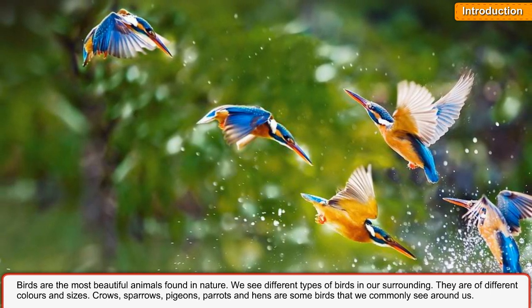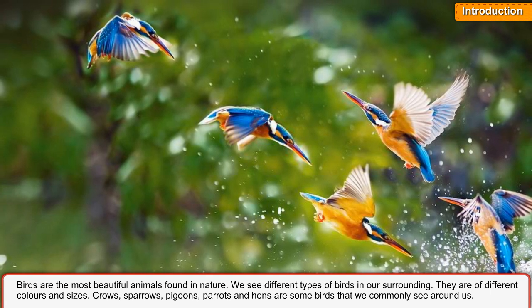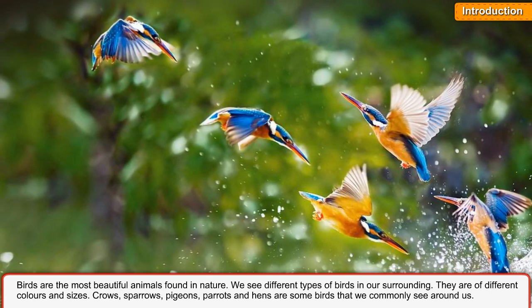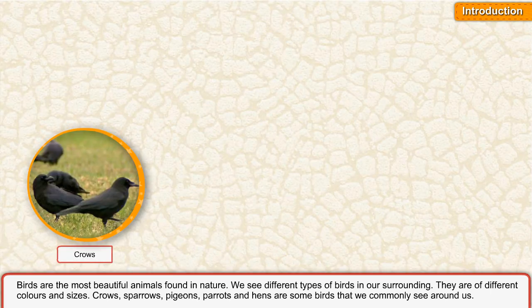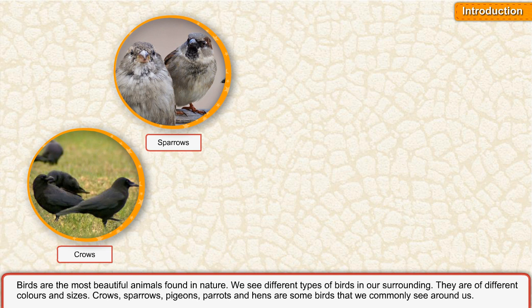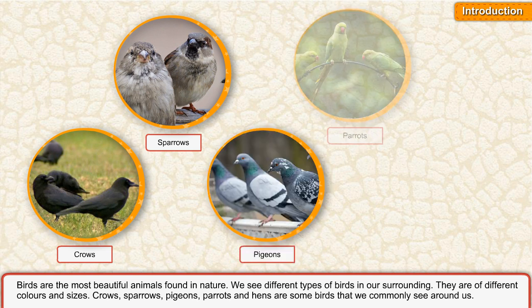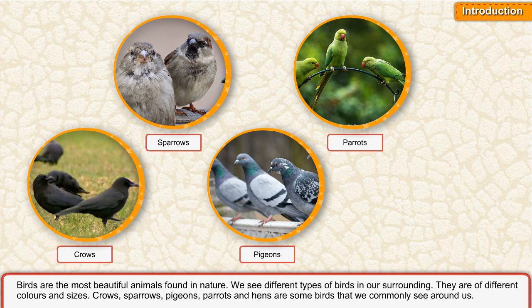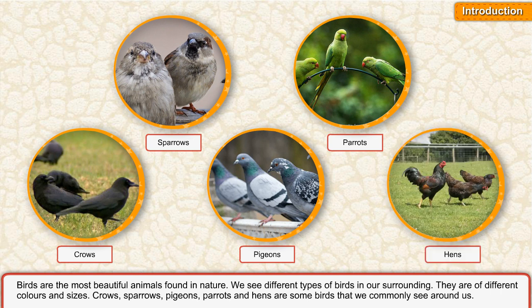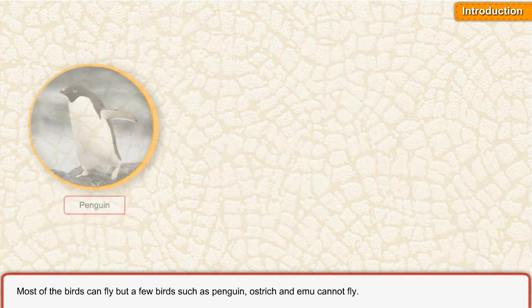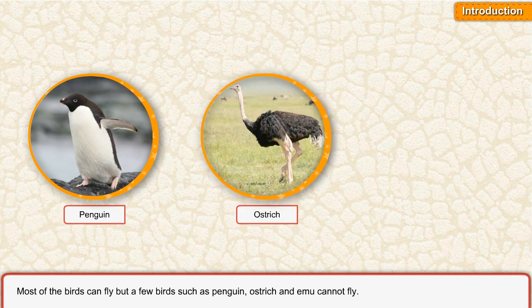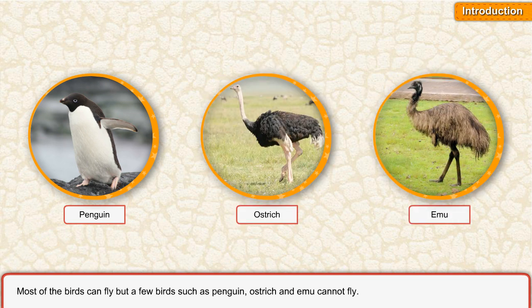Birds are the most beautiful animals found in nature. We see different types of birds in our surroundings. They are of different colours and sizes. Crows, sparrows, pigeons, parrots, and hens are some birds that we commonly see around us. Most of the birds can fly, but a few birds such as penguin, ostrich, and emu cannot fly.